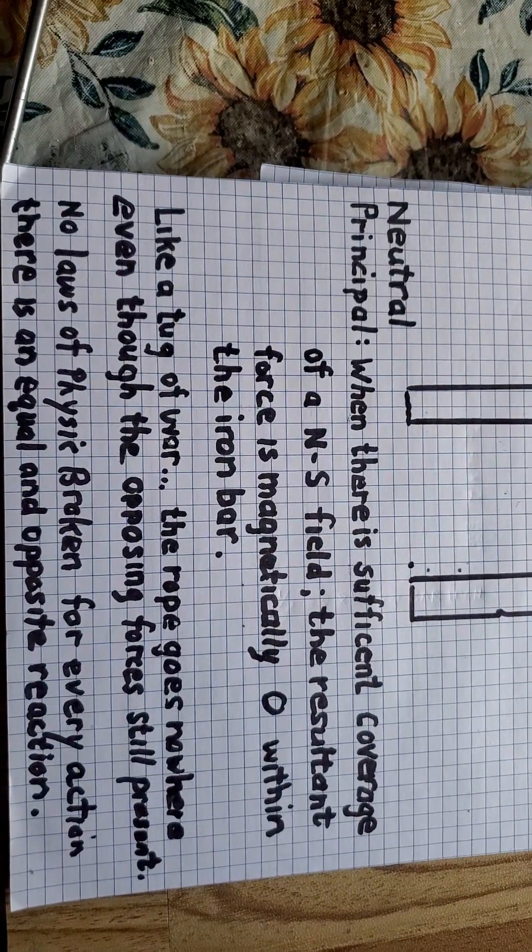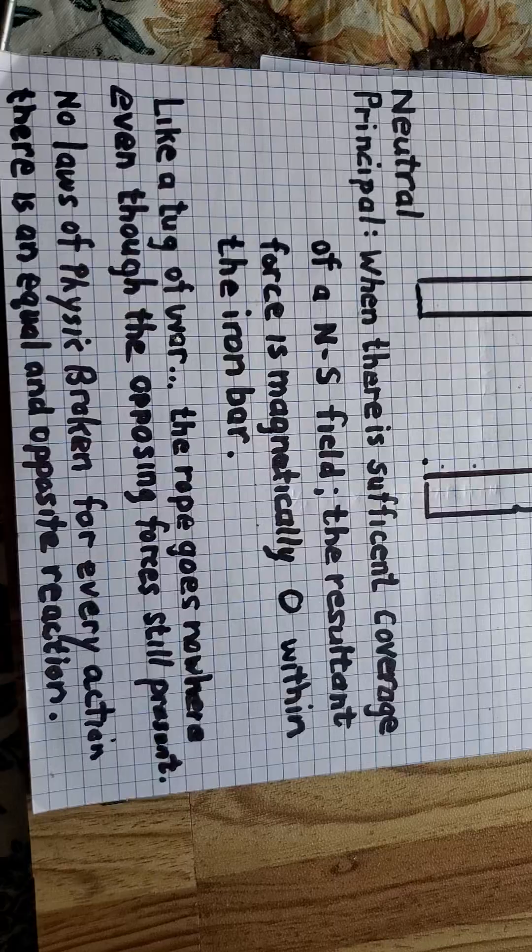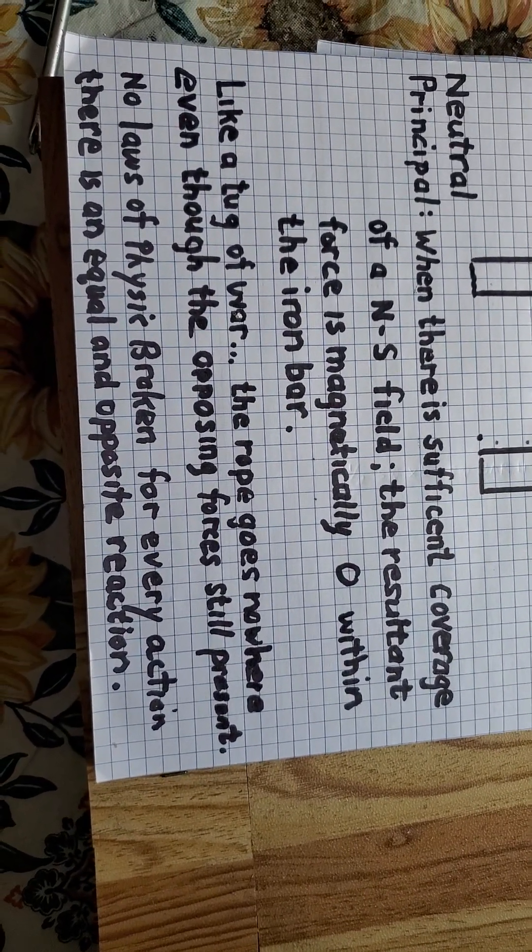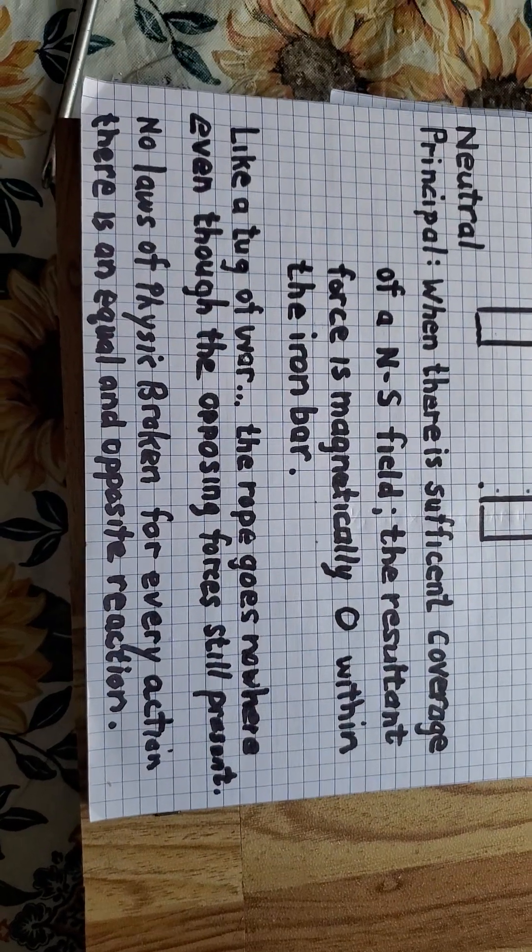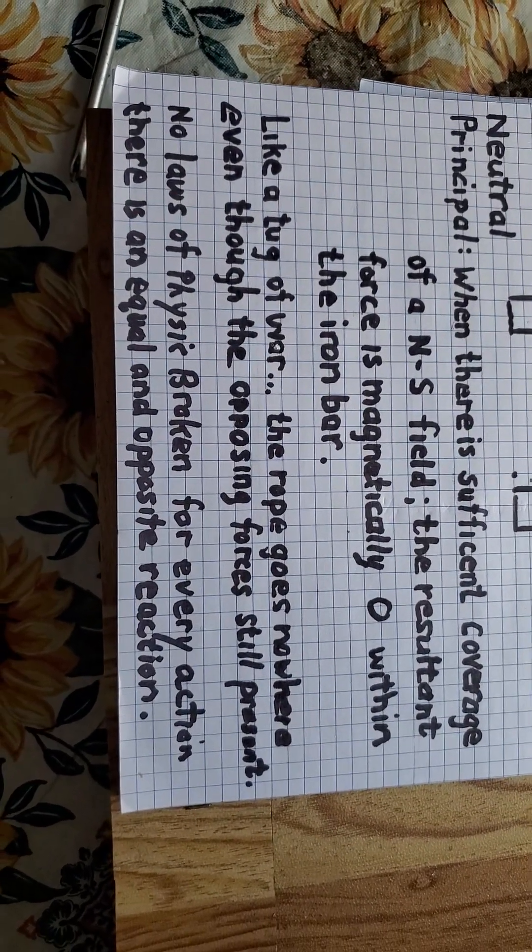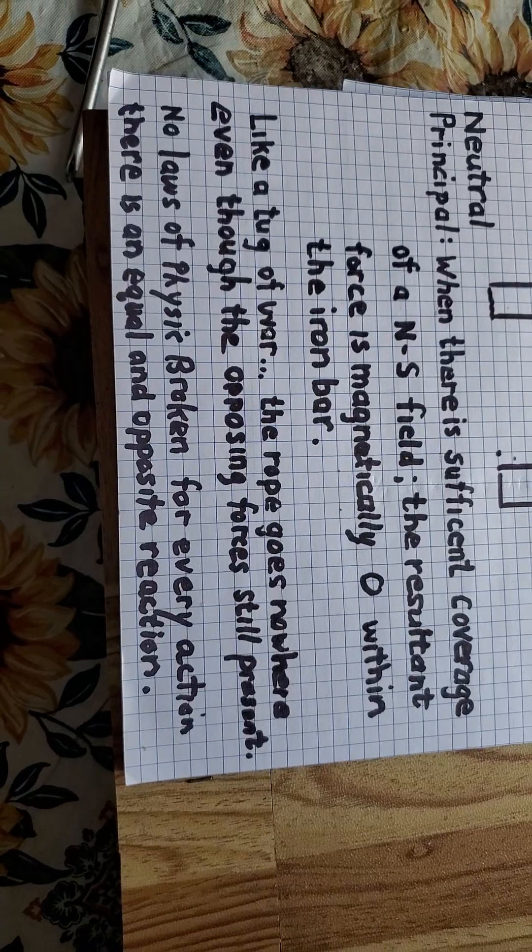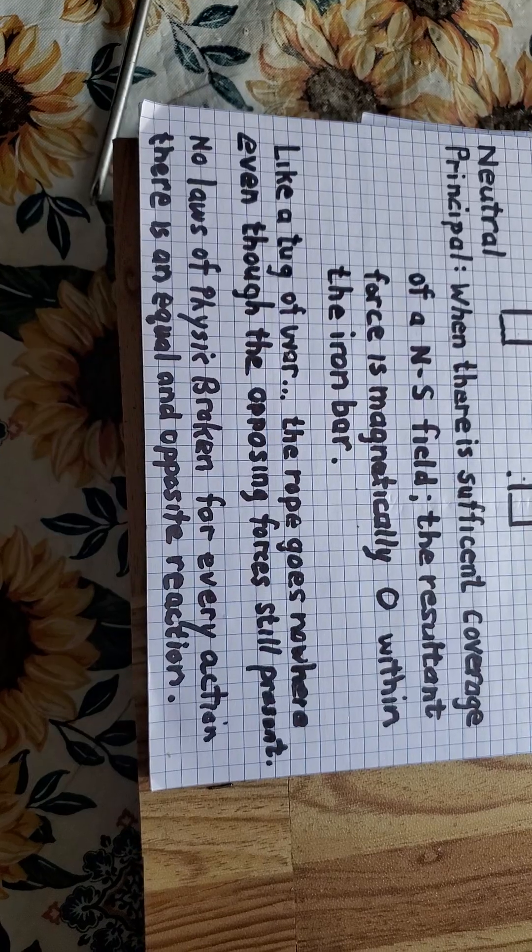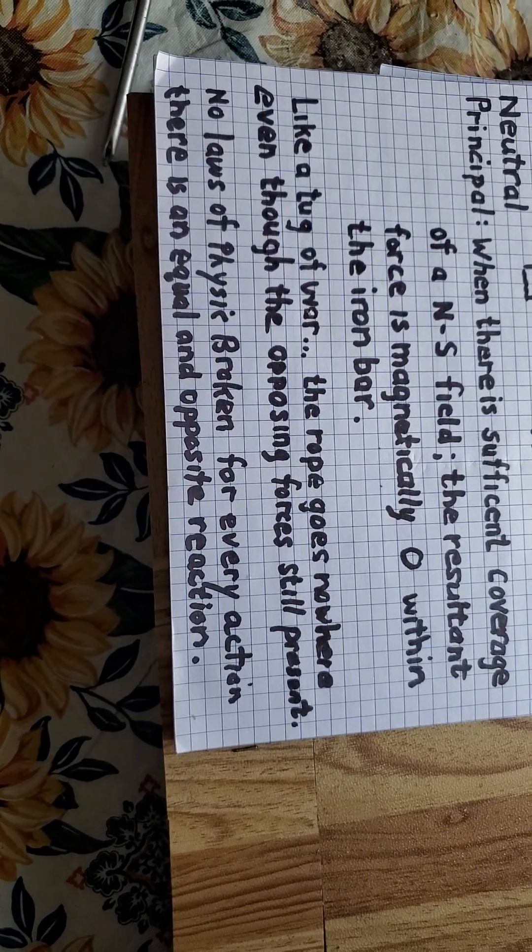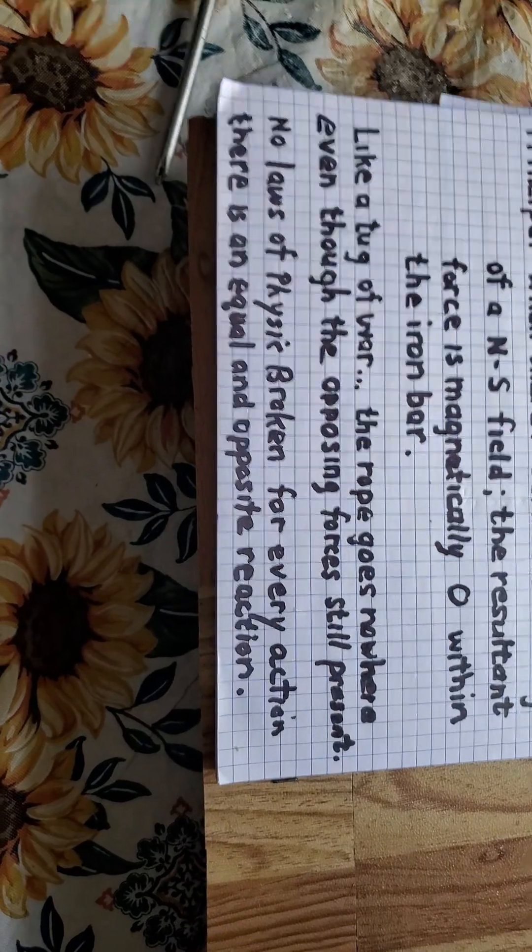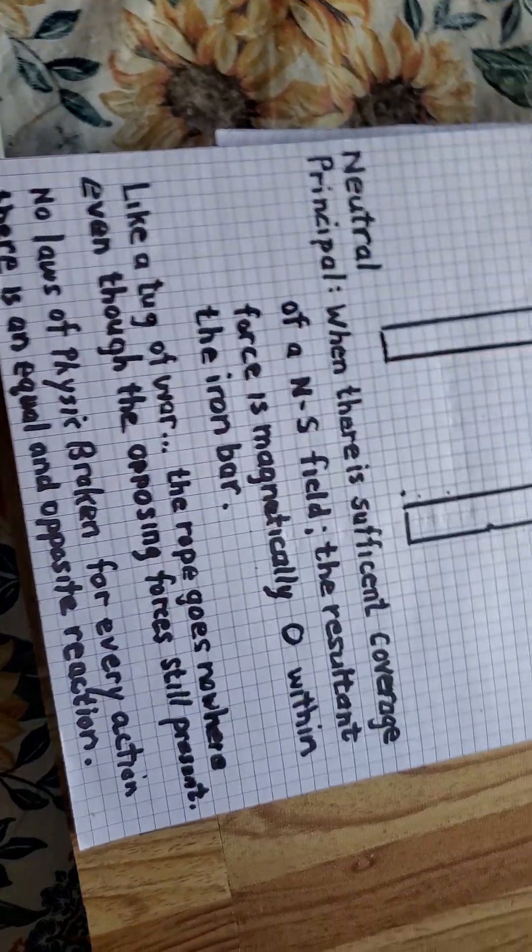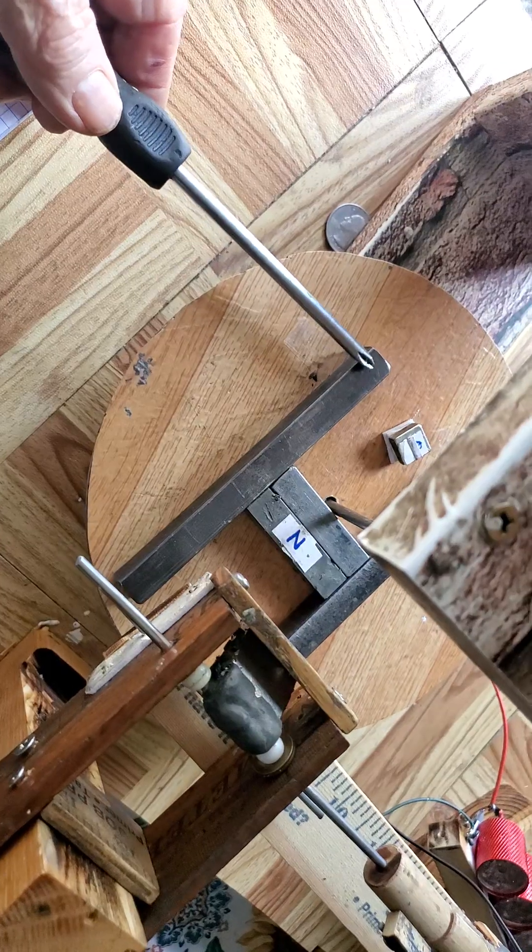So that's the reason why I think this is working so well, because it keeps it from interfering those two magnetic fields. So what's happening? The neutral principle. When there is sufficient coverage of a north-south field, the resultant force is magnetically zero within the iron bar, which we just showed there. Like a tug-of-war, the rope goes nowhere, even though the opposing forces are still there. There's no laws of physics broken here. There's one that says for every action there is an equal and opposite reaction. Where are those reaction and action forces on those bars? They're not showing up. They're magnetically neutral.